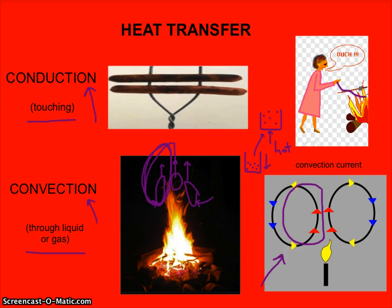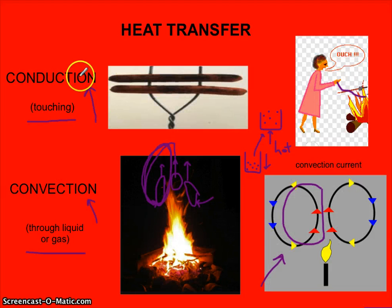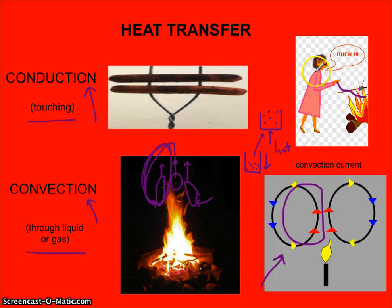Let's talk about the third form of heat transfer, and that is radiation. Radiation is the transfer of energy — or heat — by electromagnetic waves. Electromagnetic waves do not need a medium. With conduction, the medium is the fact that objects are touching each other. This coat hanger gets warm because of what's touching it — the hot dogs — and the hot dogs get warm because of the fire.